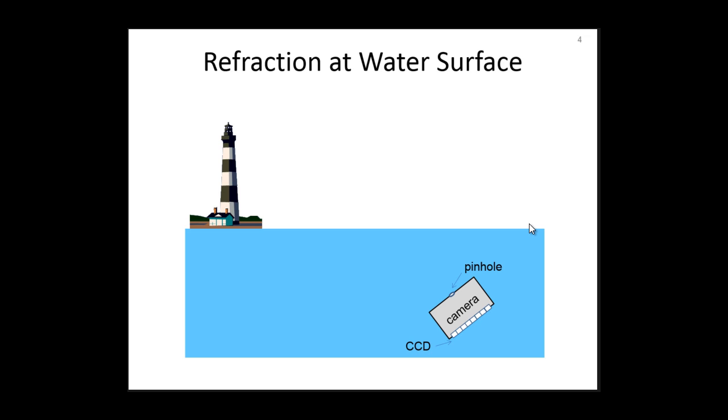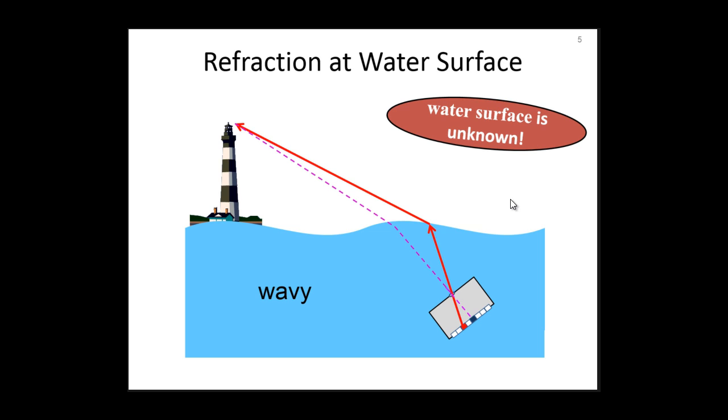When the water is flat, this point projects to this pixel. When the water is wavy, the same point now projects to a different pixel, so we get a distorted image. If the water surface was known, we could backproject to obtain a flat water image. But the water surface is not known.